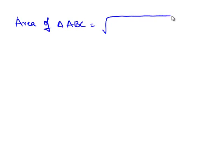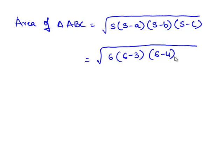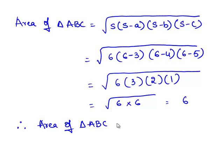Now we substitute the value of S into the formula for the area of triangle ABC: area = √(S × (S−A) × (S−B) × (S−C)) = √(6 × 3 × 2 × 1) = √36 = 6. Therefore, the area of triangle ABC is equal to 6 cm².